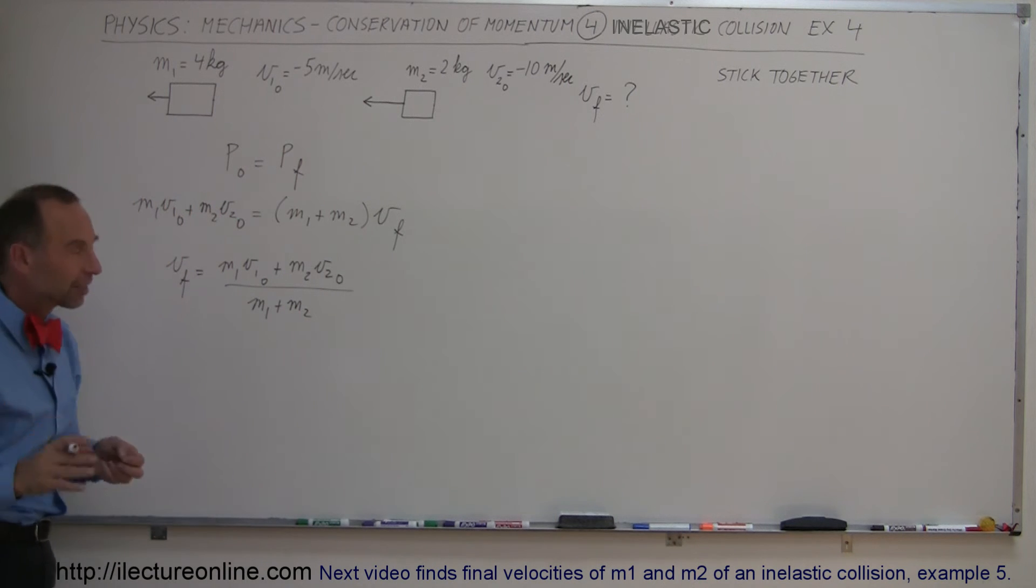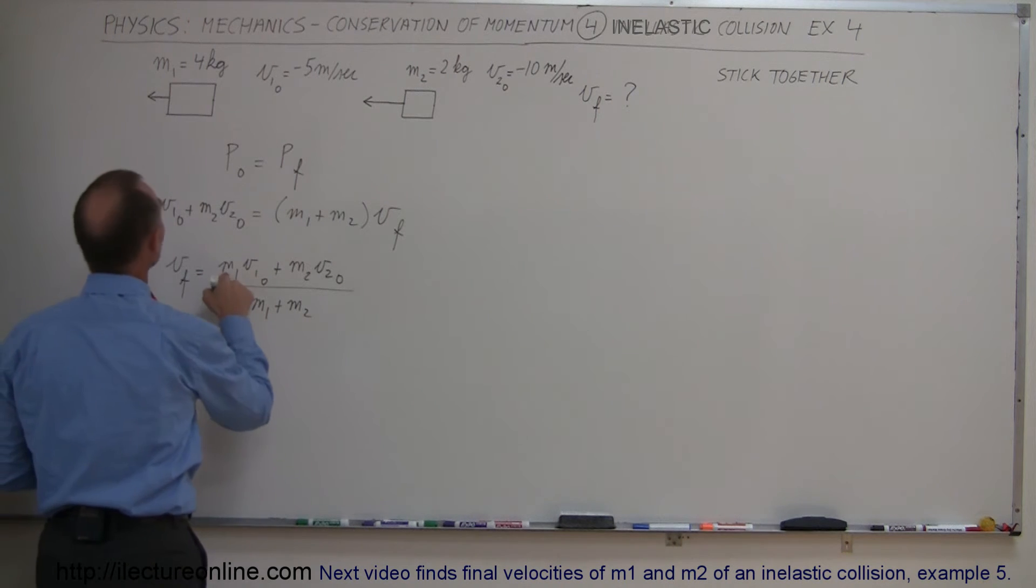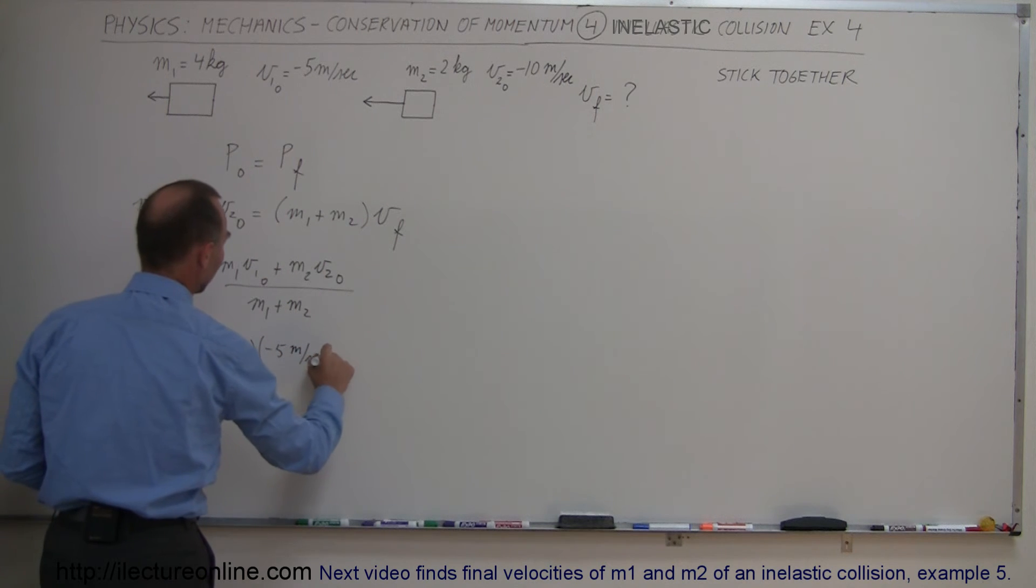Again momentum is a vector quantity, we want to make sure that to the right is positive, to the left is negative, we keep that convention. So let's write down what we have. m1 is 4 kilograms and v1 initial is minus 5 meters per second to the left.